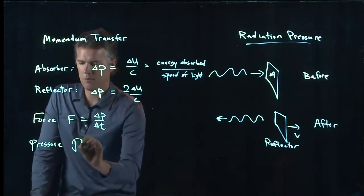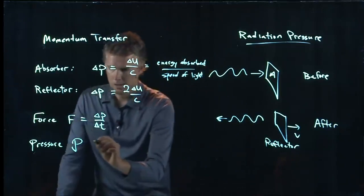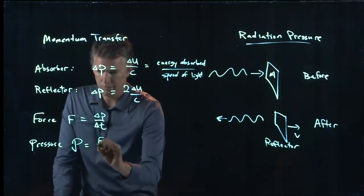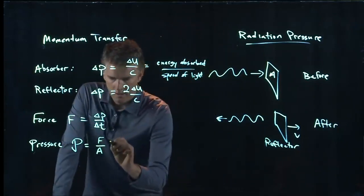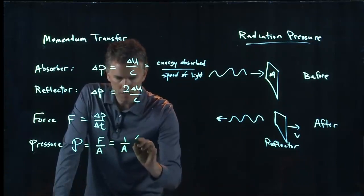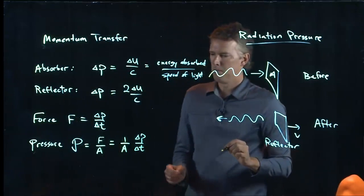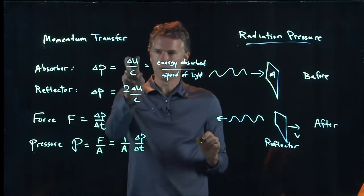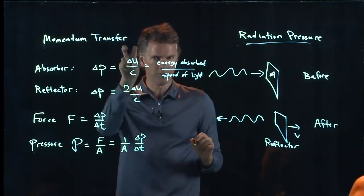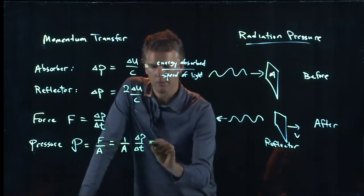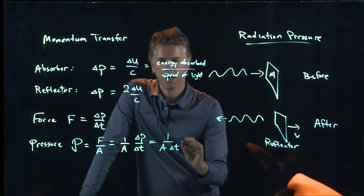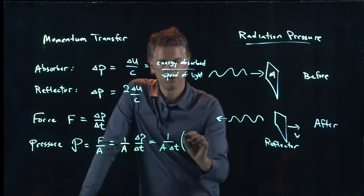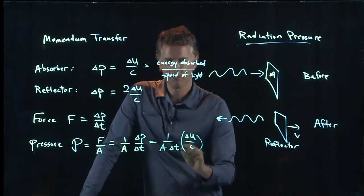And pressure we write with this sort of capital P looking thing. Pressure is just force divided by area. Force we just said was delta P over delta T, but I know what delta P is. Delta P in the absorber case is just delta U over C. So this becomes one over A delta T. And then I have delta P, which is delta U over C.